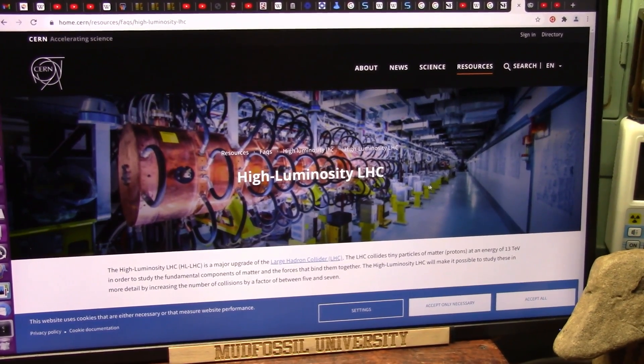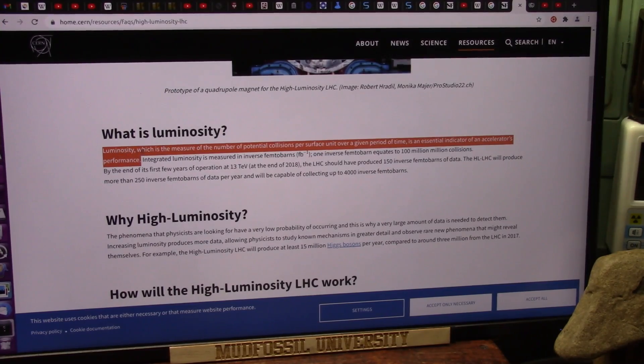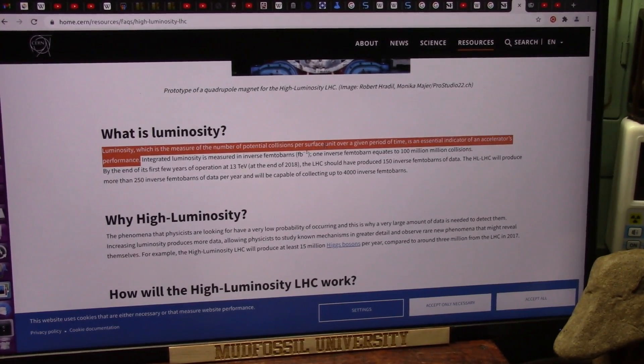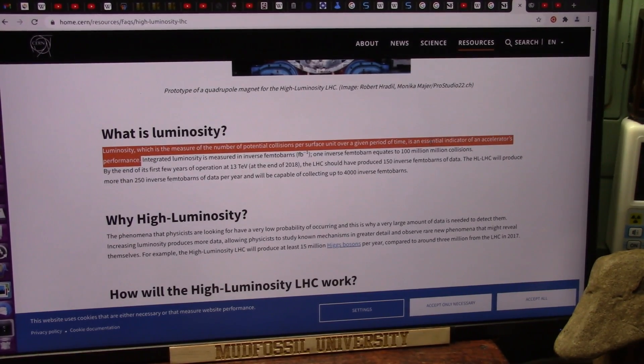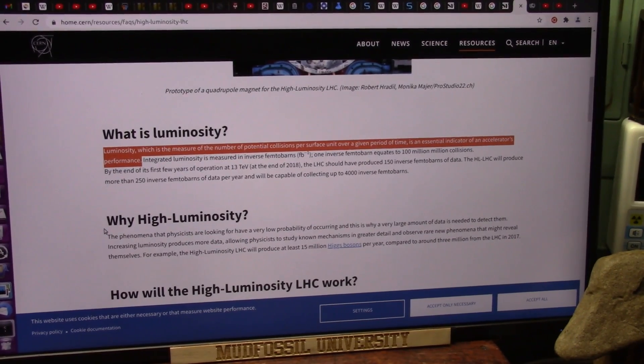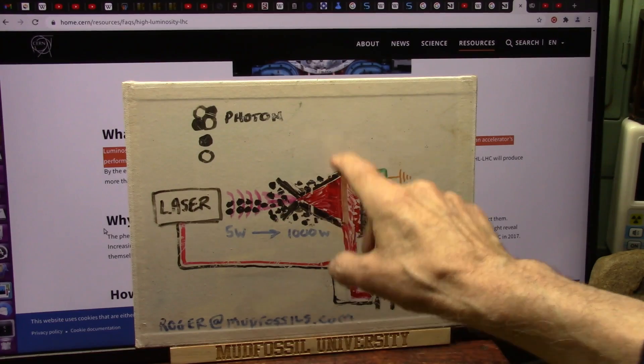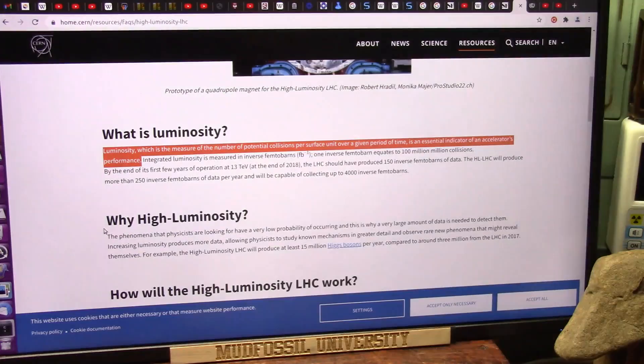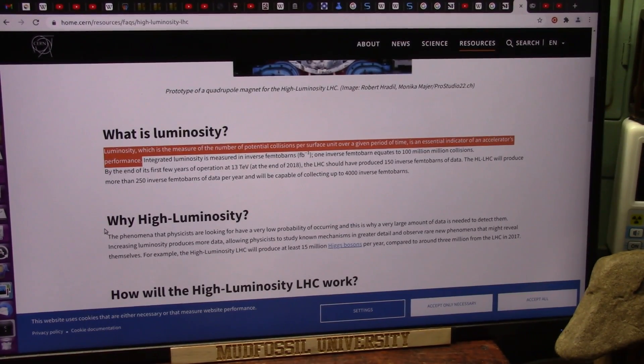You saw the luminosity I just showed you. This is exactly what it is. Luminosity is the measure of the number of potential collisions per surface unit over a given period of time. It is an essential indicator of an accelerator's performance. Our performance is not only outstanding, it's focusable. We can squirt it. We're just not having gigantic explosions from protons. This is something that could possibly save our Earth. And it needs to be looked at instantaneously.